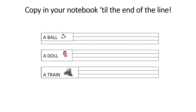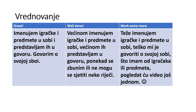Till the end of the line. Imenuj igračke i predmete u sobi, predstavljam ih u govoru bez problema, govorim o svojoj sobi. Većinom imenujem igračke i predmete — well done. Većinom ih predstavljam u govoru, ponekad se zbunjujem ili ne mogu sjetiti nekih riječi — work some more. Radi još ili pogledaj video još jednom. Teže mi je imati igračke i predmete u sobi, teško mi je govoriti o tome što imam — pogledaj video još jednom. That's all for today, thank you very much.